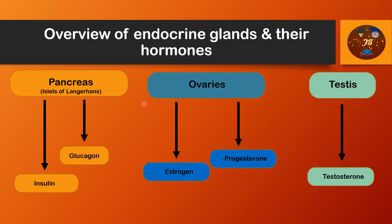There are three other body parts that also act as endocrine glands. Most important is the pancreas — specifically the islets of Langerhans — which secretes two important hormones: insulin and glucagon. Insulin promotes glucose entry into most cells of the body, thereby controlling the rate of carbohydrate metabolism. Glucagon acts in opposition to insulin — it increases the release of glucose from the liver into the circulating body fluids.